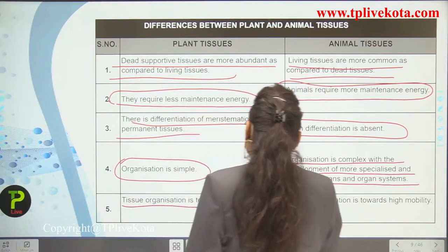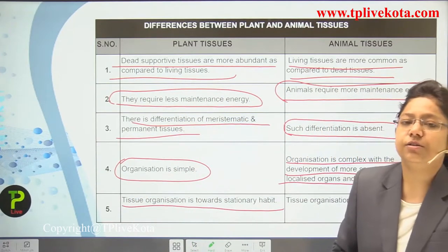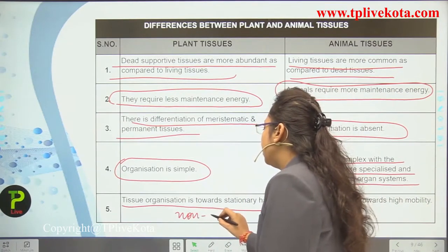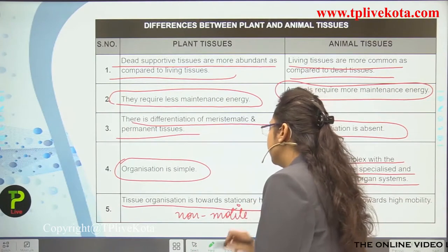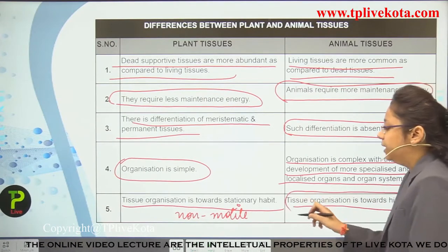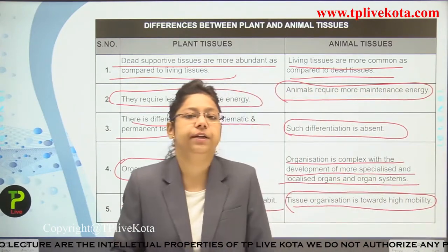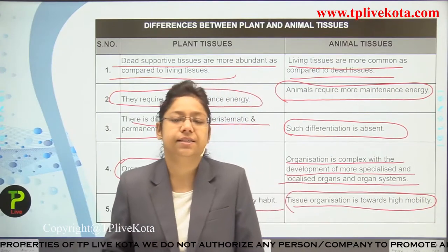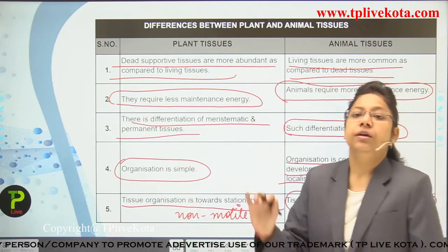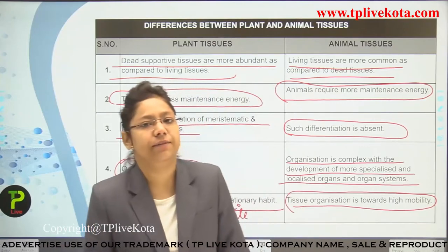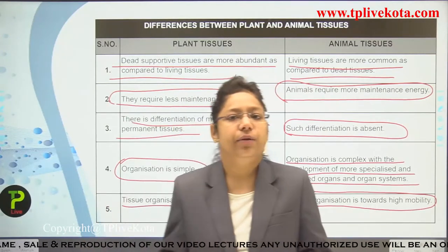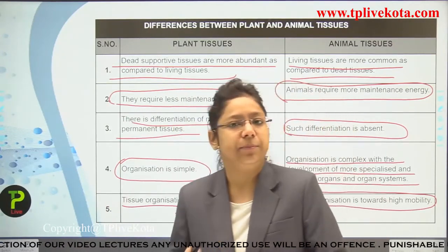Fifth, plant tissue organization is towards stationary habit — plants are non-motile. In animals, tissue organization is towards high mobility because locomotion is present. These five differences are important and some may be asked in board-level examinations. They are easy to learn — study all five and attempt questions confidently.